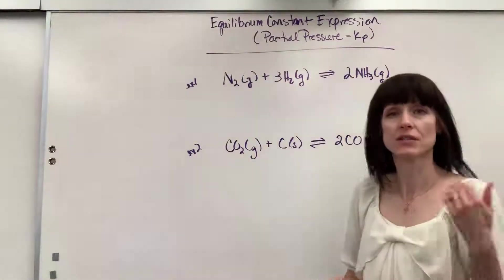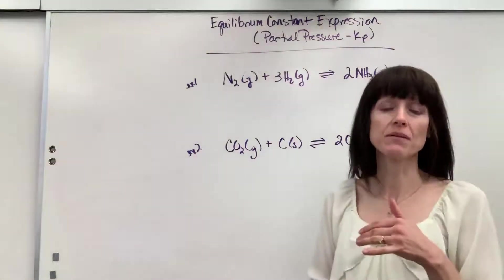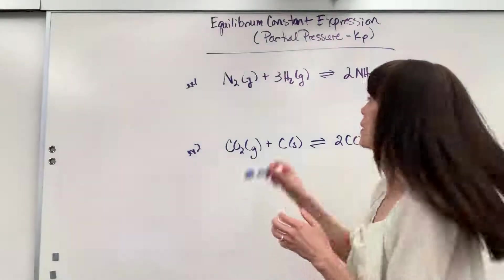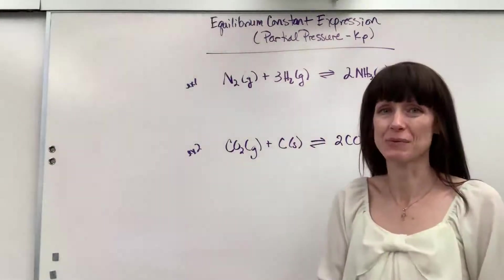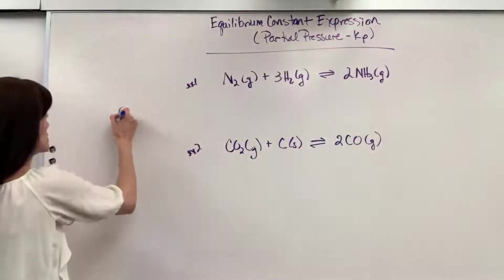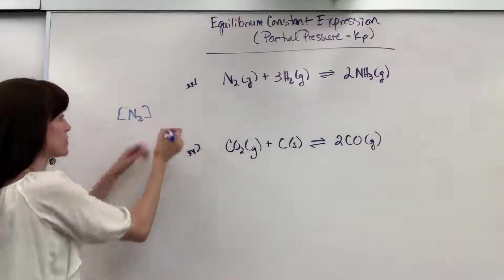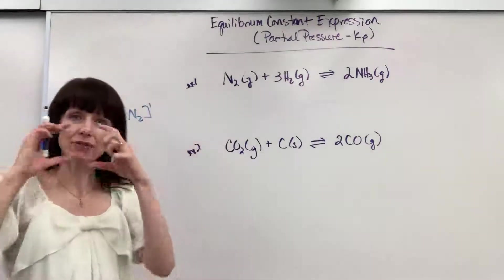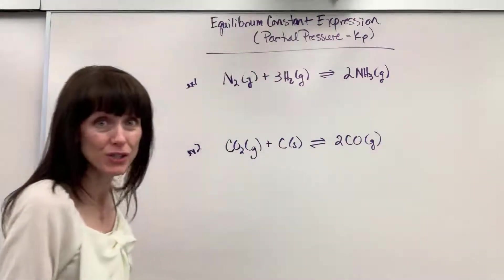When given partial pressure, you're still going to follow products divided by reactants, and the coefficients are going to be the exponents. The difference is, instead of writing brackets for concentration, like this N2 to the first power, instead of writing brackets, we write the partial pressure.